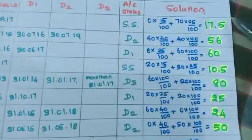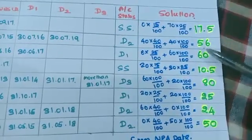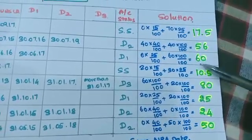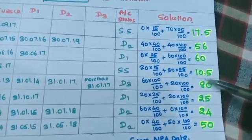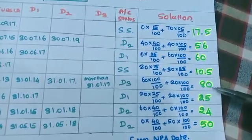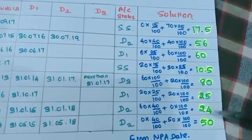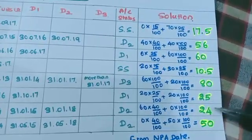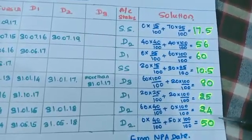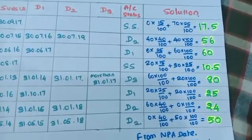So we have the solutions: 17.5 for A1, 56 for A2, 60 for A3, 10.5 for A4, 80 for A5, 25 for A6, 24 for A7, and 50 for A8. These are the provisioning norms. Thank you friends.